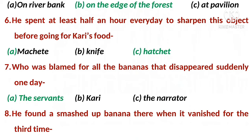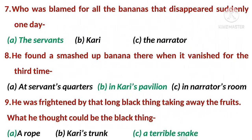Number seven: who was blamed for all the bananas that disappeared suddenly one day? Answer is A — the servants. Number eight: he found a smashed banana there when it vanished for the third time. The right option is B — in Kari's pavilion.